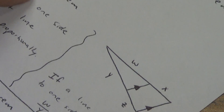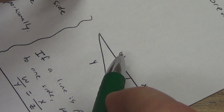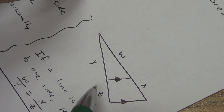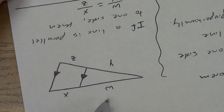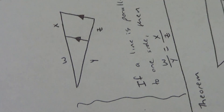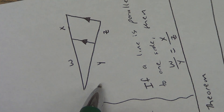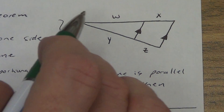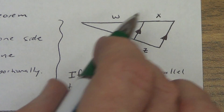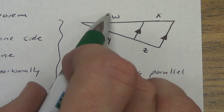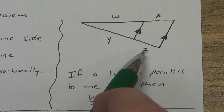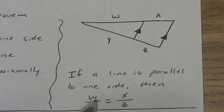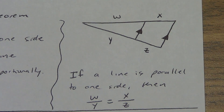Now if it's tilted a different way, it might look like W over X equals Y over Z — that's fine, it'll still work. You could flip it upside down: Z over X equals Y over W — still works. Or X over W equals Z over Y — still works. What you cannot do is put W over Z and X over Y, or mix them like W over Y and then Z over X backwards. You have to stay consistent. That's the main idea.